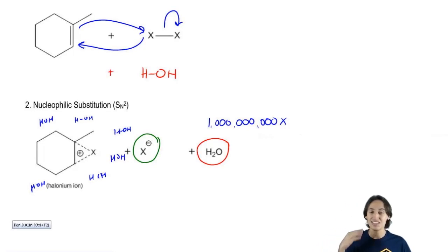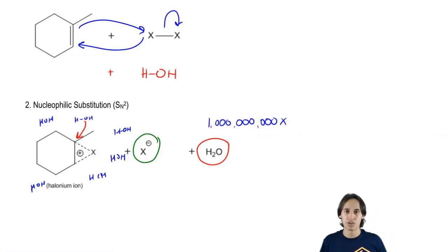So what that means is that in the second step, even though the X negative is more stable and is more nucleophilic, my water is going to wind up attacking the most substituted side. Does that make sense? Because there's just a whole lot more of it around. Now for this water, is it going to attack the more substituted or the less substituted? It's still going to attack the more substituted side because that's the one with the most positive character.